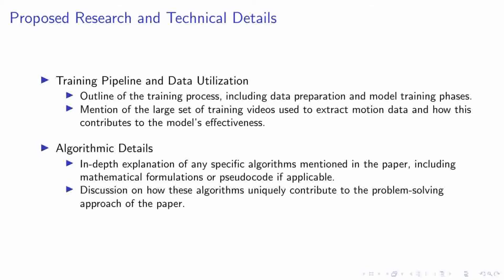In our training pipeline, we begin by preparing a vast dataset of videos from which we extract motion data. This extensive collection is crucial, as it allows our model to learn from a rich variety of real-world dynamics, enhancing its ability to generate realistic animations from still images. We employ a diffusion model that predicts motion by generating spectral volumes, which represent the frequency domain characteristics of pixel trajectories, enabling our model to capture the essence of scene dynamics effectively. This method ensures that the animations remain coherent over time, avoiding common issues like drift or distortion, and significantly advances the field of image animation.